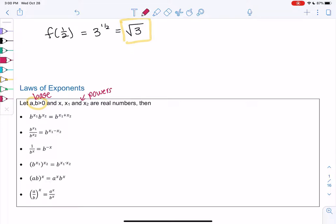If we have b to the x1 times b to the x2, then we can add the powers. We get b to the x1 plus x2 as the power. An example might be x squared times x cubed. We can combine the powers and make that x to the fifth.